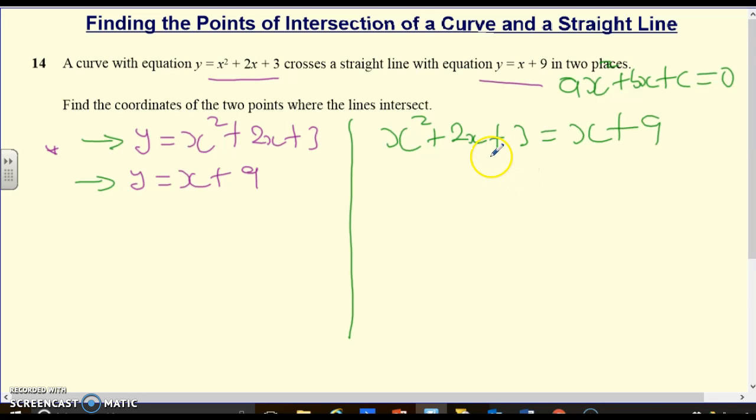We'll do that by subtracting 9 on both sides because we want to end up with a 0 on the right hand side. What else would we do?